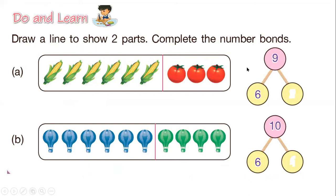In number one, what number is missing? You can see we have nine pictures: one, two, three, four, five, six, seven, eight, and nine. On one side we have six — so what is the other part? That will be three, so six and three make nine. Now write your answer for part b.